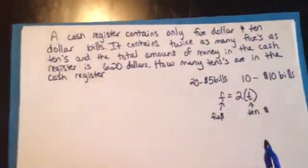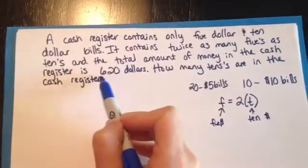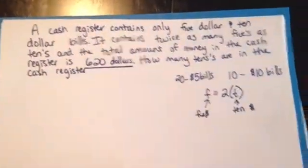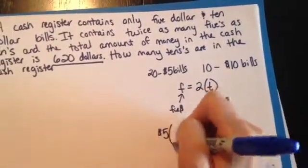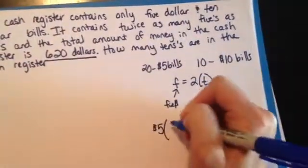Then the next part of this tells me that there's $620 in the cash store. So, basically, if I take $5 times the amount of $5 bills in my drawer,